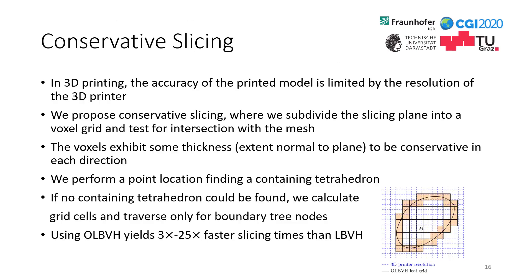Another interesting research field is 3D printing. The accuracy of a printed model is limited by the resolution of the 3D printer. To mitigate this, we propose a new conservative slicing algorithm. In conservative slicing, we subdivide the slicing plane into a voxel grid and test for intersection with the input mesh using the OLBVH. Each voxel has some thickness—the extent normal to the plane—to be conservative in each direction.